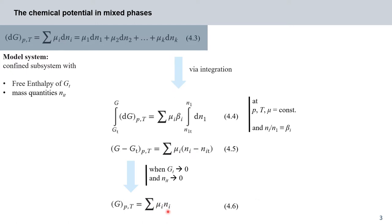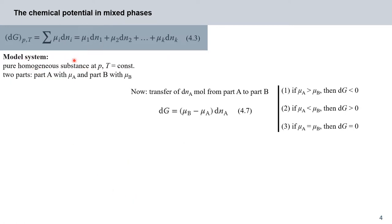Consider again a system consisting of a pure homogeneous substance at fixed pressure and temperature, where the chemical potential is not the same at all points of a phase — it is mu_a in part A and mu_b in part B. If we transfer dN_A moles from A to B, we expect a change in free enthalpy given in equation 4.7: dG equals mu_b minus mu_a times dN_A.